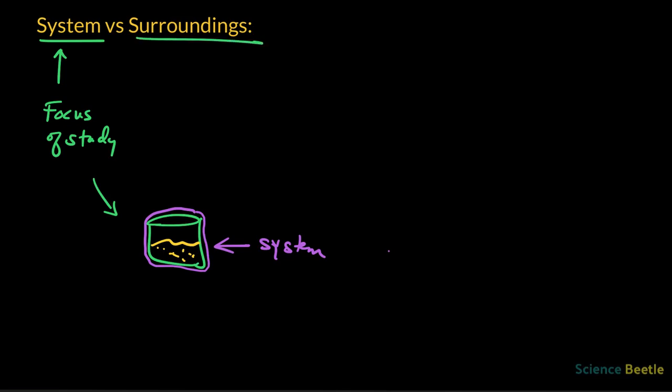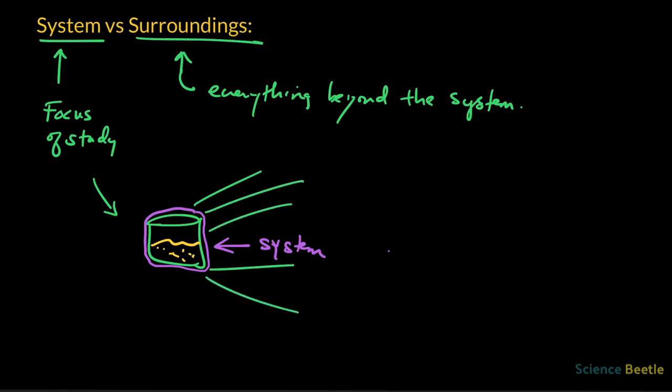Everything beyond that then is going to be what we call the surroundings. That's the second term here. The way we define this, the surroundings, this is everything beyond the system. That would mean all of the area extending out from the actual system of study. All of that is going to be the surroundings.